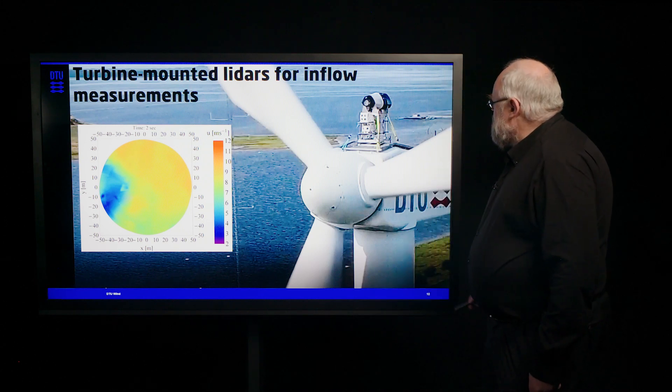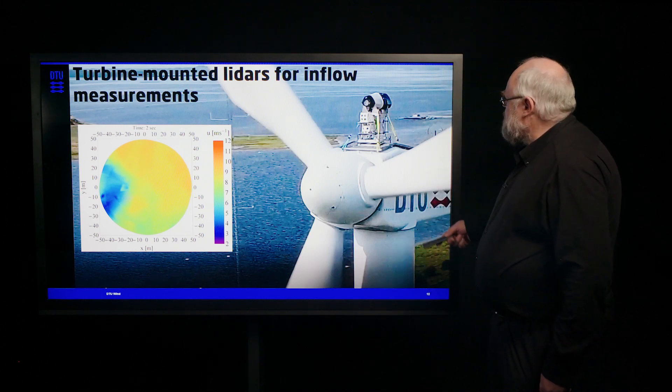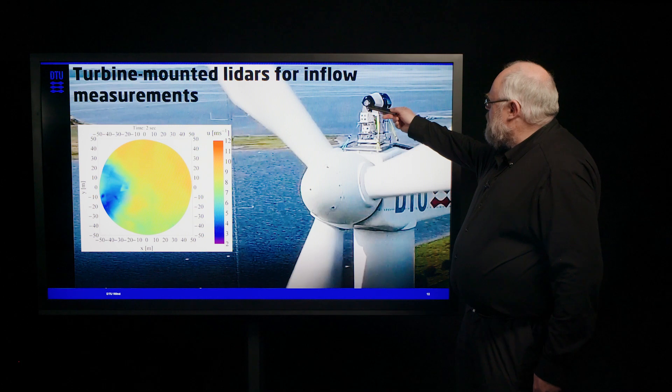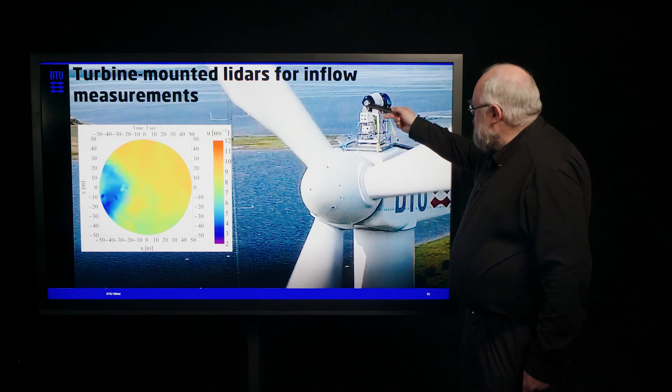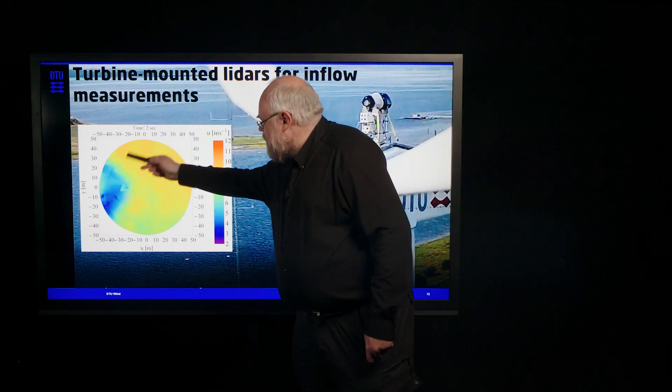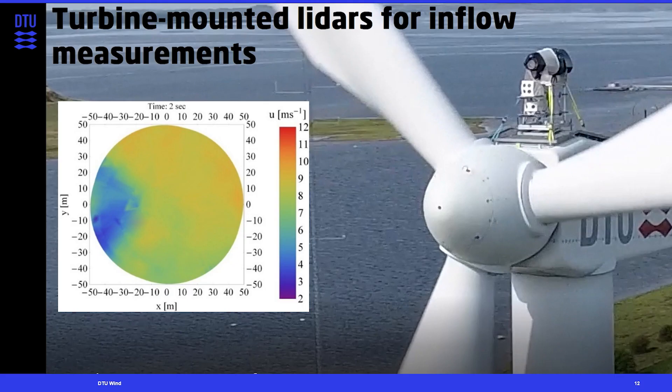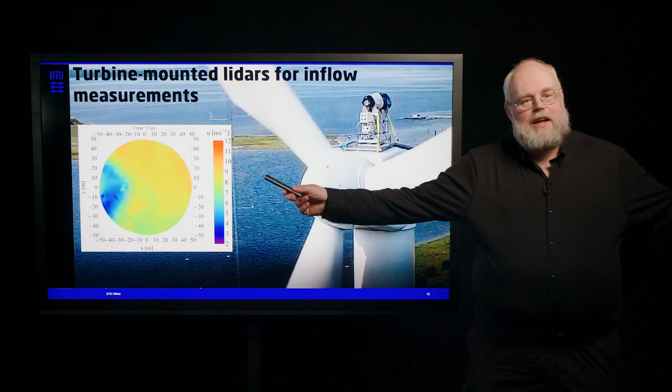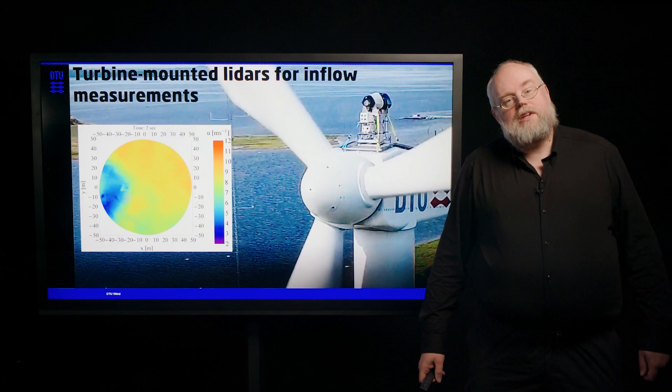So here is an example where we have used some different lidars. This top one we call it the spinner lidar. It is actually developed to be inside a spinner. But it can measure over a whole rotor area here. So you can see wakes coming in. And then there are some more commercial systems here with just two beams or four beams that can be used to direct the wind turbine into the correct wind direction.